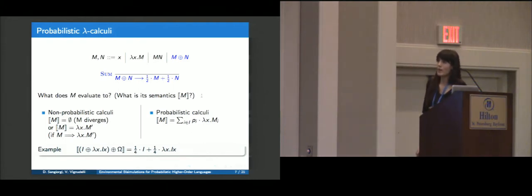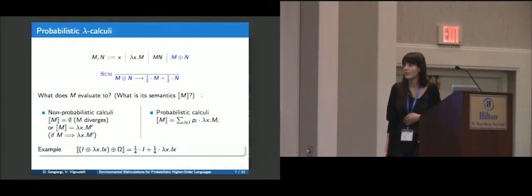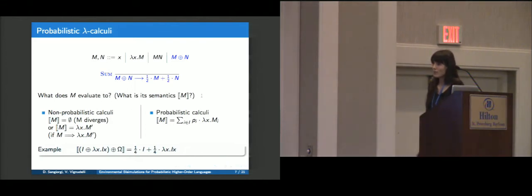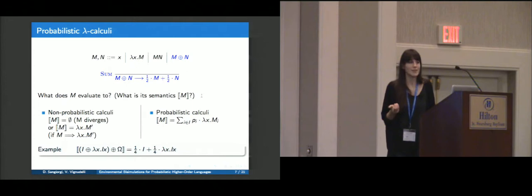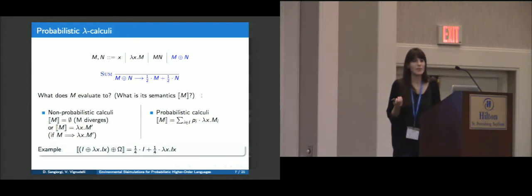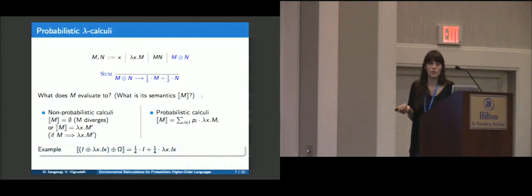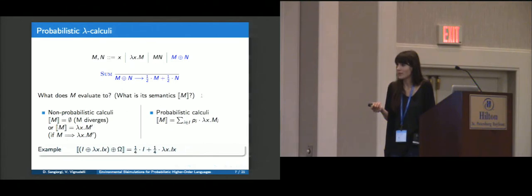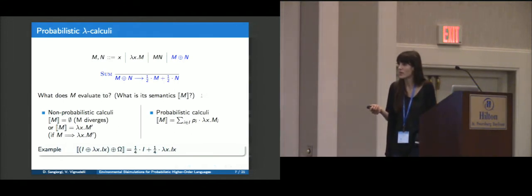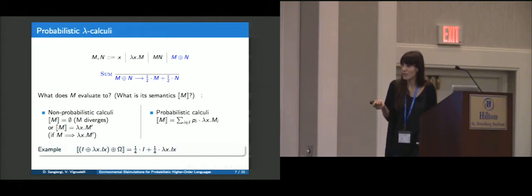How do we define environmental bisimulation for probabilistic calculi? The easiest way to add probabilities is to add a probabilistic fair choice operator: the term M plus N becomes M with probability one half and N with probability one half. But now what does a term evaluate to? In the non-probabilistic case, a term either diverges or reaches a value. In probabilistic calculi, the semantics of a term is a probability distribution on values. For example, a term might diverge with probability one half, losing that probability mass, and with probability one half have a further probabilistic branch — yielding, say, the identity with quarter probability and lambda x.x with quarter probability. So we actually have sub-probability distributions.